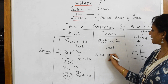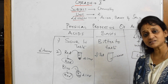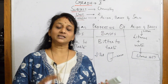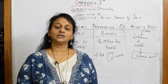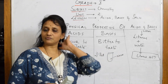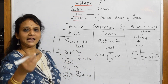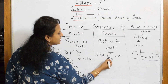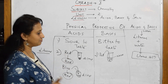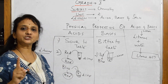Now take a red litmus paper and dip it into a test tube containing sodium hydroxide solution. Sodium hydroxide is a base because it contains OH minus ions. Examples of bases: sodium hydroxide, calcium hydroxide, magnesium hydroxide, barium hydroxide, ammonium hydroxide. In bases, the moist red litmus paper turns blue. The indication of a base is blue.